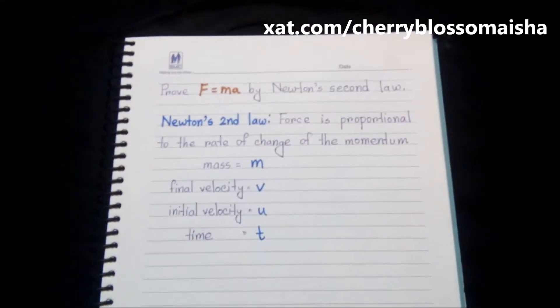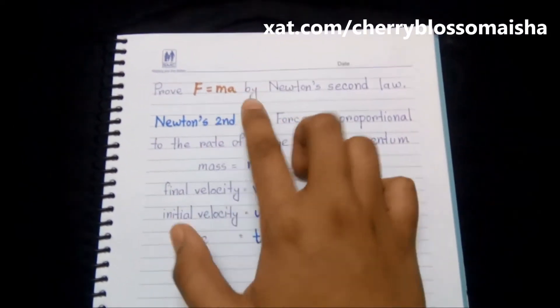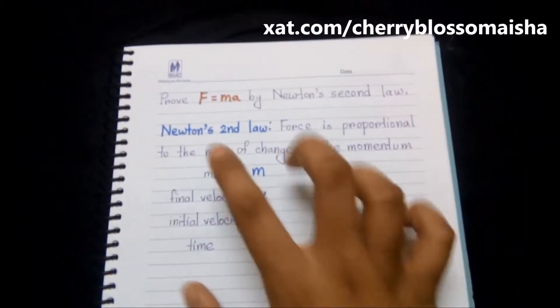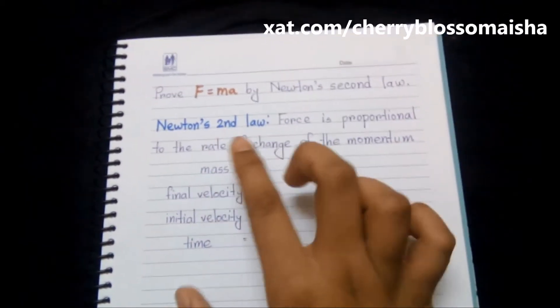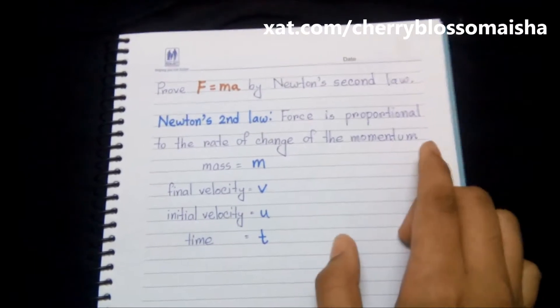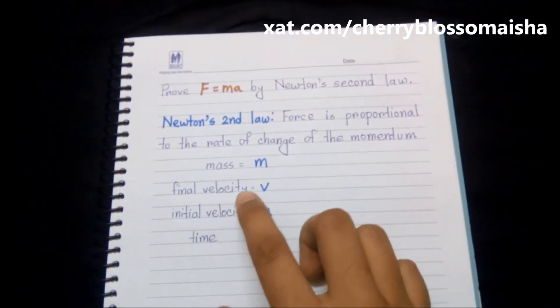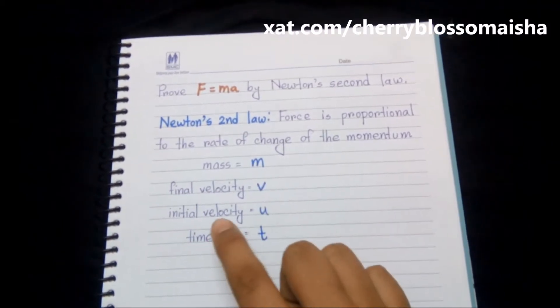Hey everyone, welcome to my channel. So today we are going to prove F equals ma by Newton's second law. So what's Newton's second law? Newton's second law is force is proportional to the rate of change of the momentum. So if mass is equal to M, final velocity is equal to V, the initial velocity is equal to U, and time is equal to T.